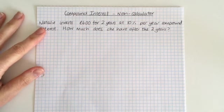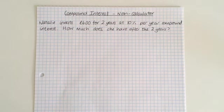So Natalie invests £600 for two years at 10% per year compound interest. How much does she have after the two years?